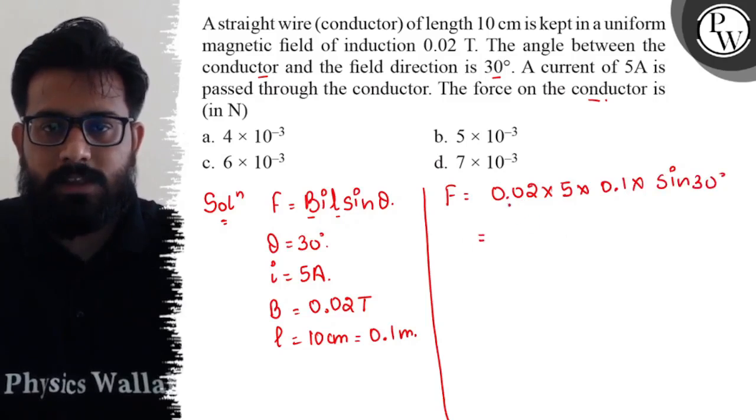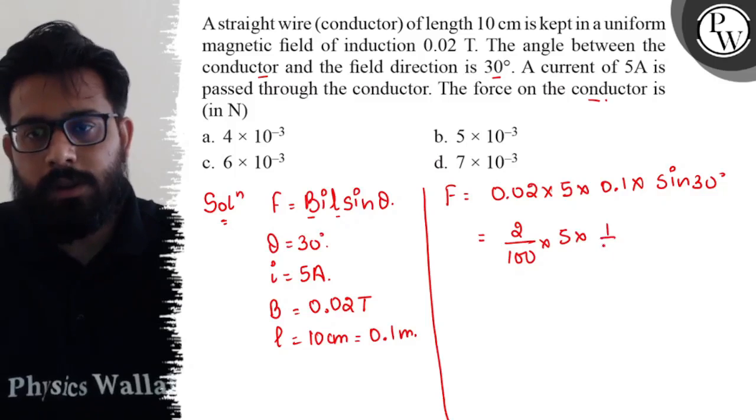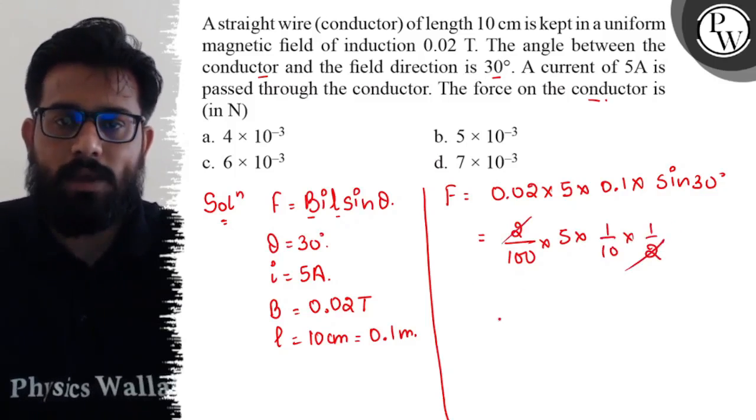So 2 upon 100 into 5 into 1 upon 10 into 1 upon 2 - sine 30 is 1 by 2. So 2 and 2 cancel out again.